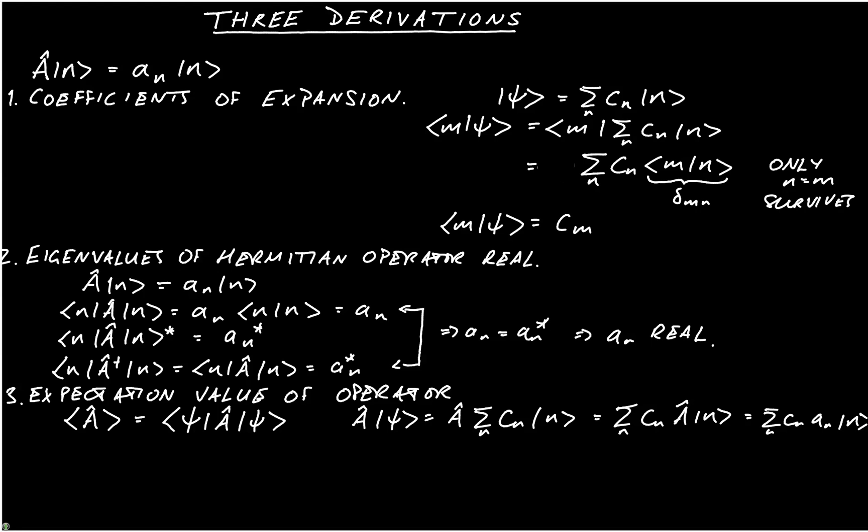We now contract that with ψ as a bra. And now we're going to use a different index, we're going to use m instead of n. We must have c_m*, and we will have ⟨m|. I'll put brackets around that, and we're going to act with that on sum over n, c_n a_n |n⟩.